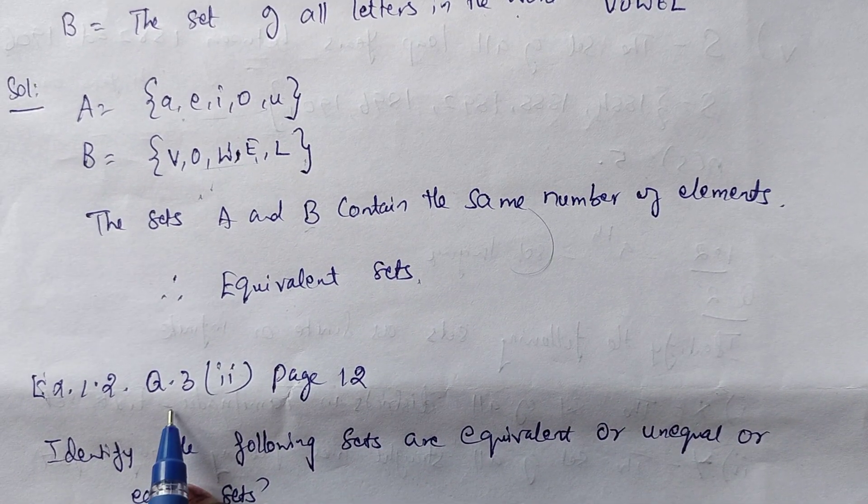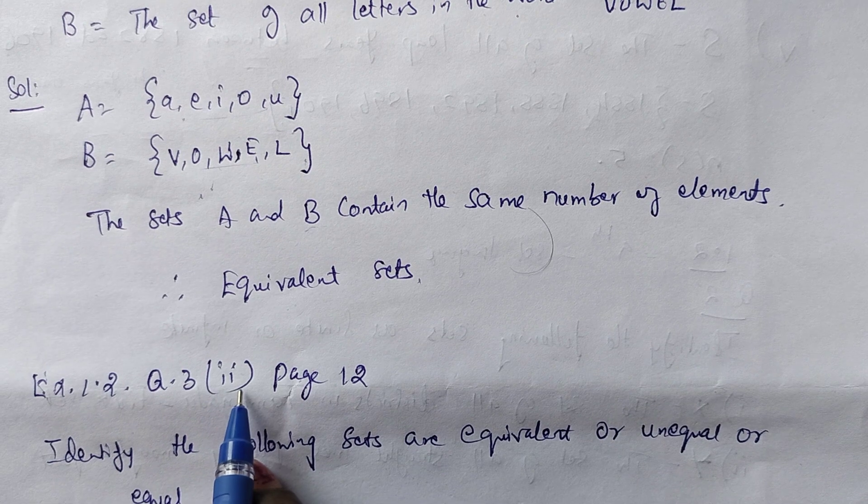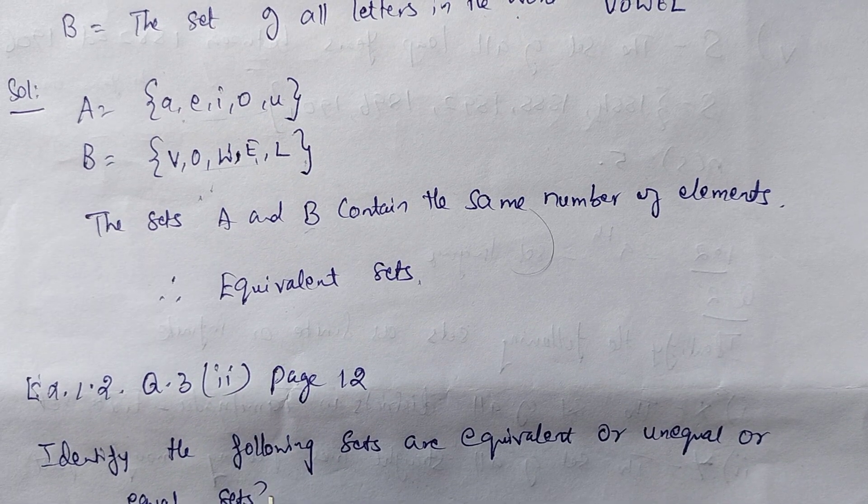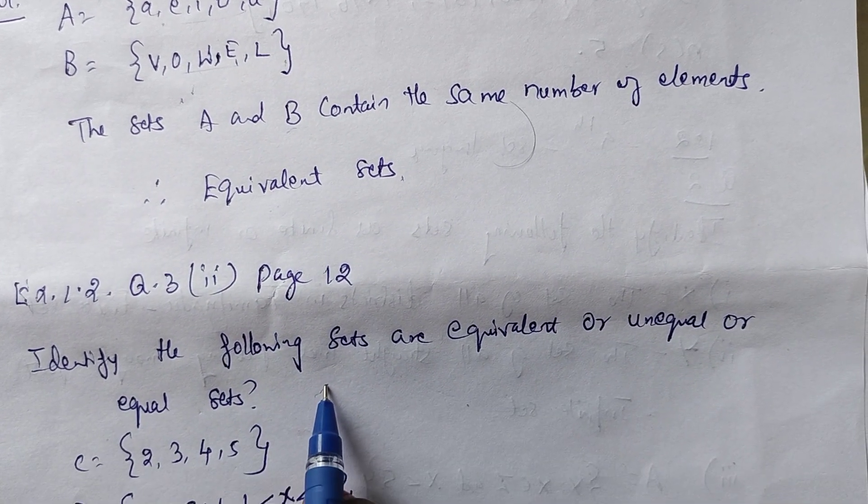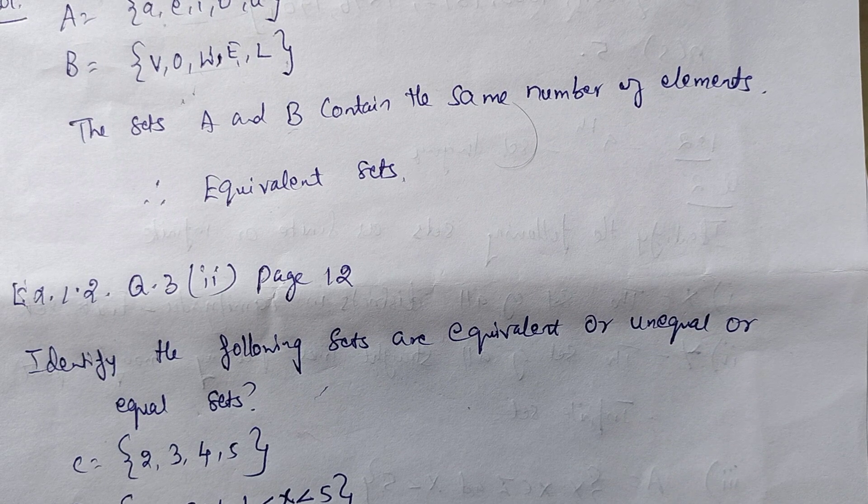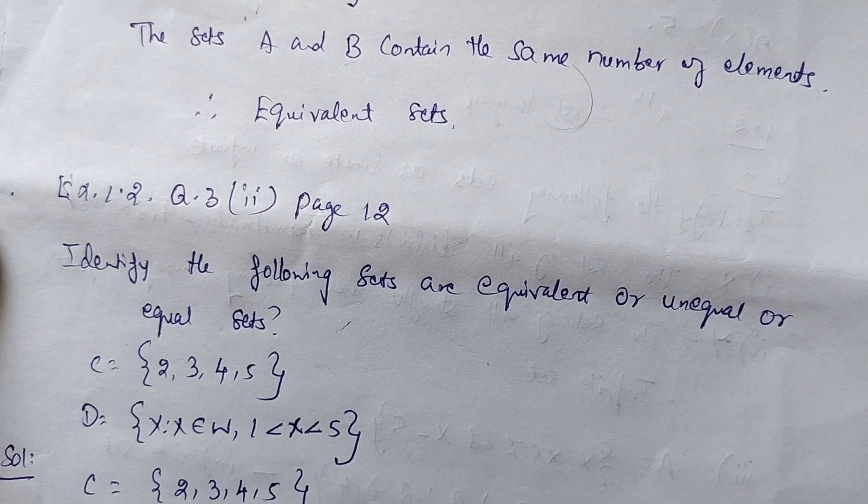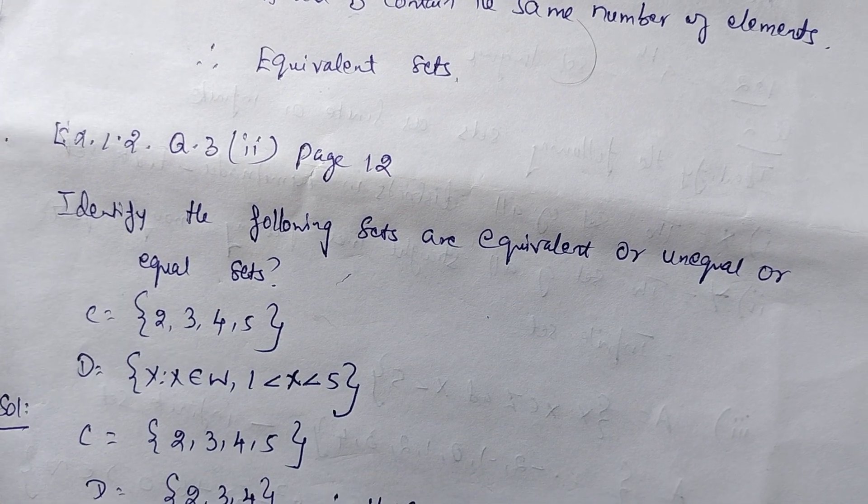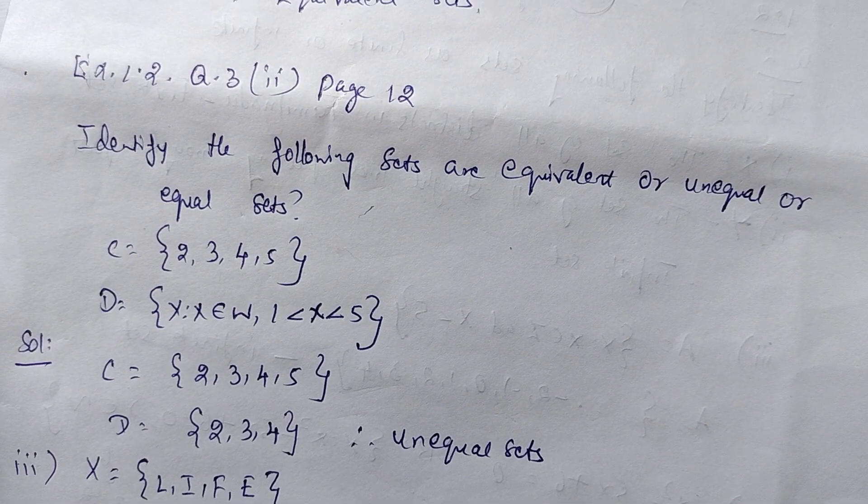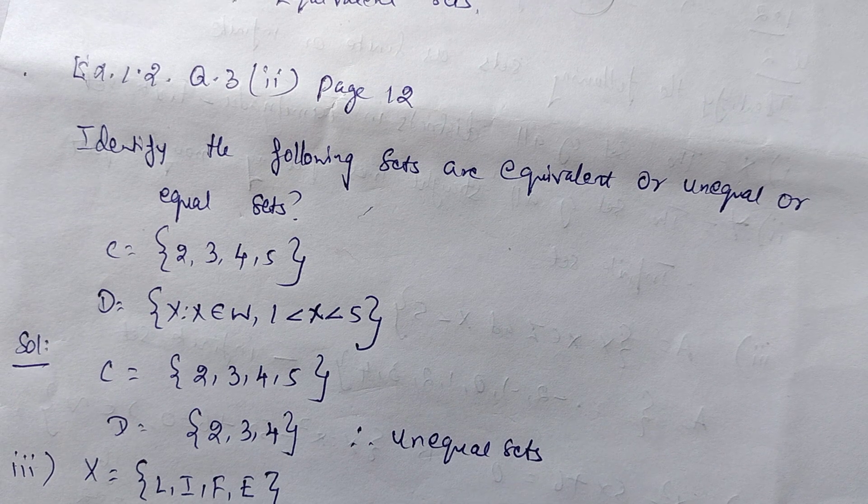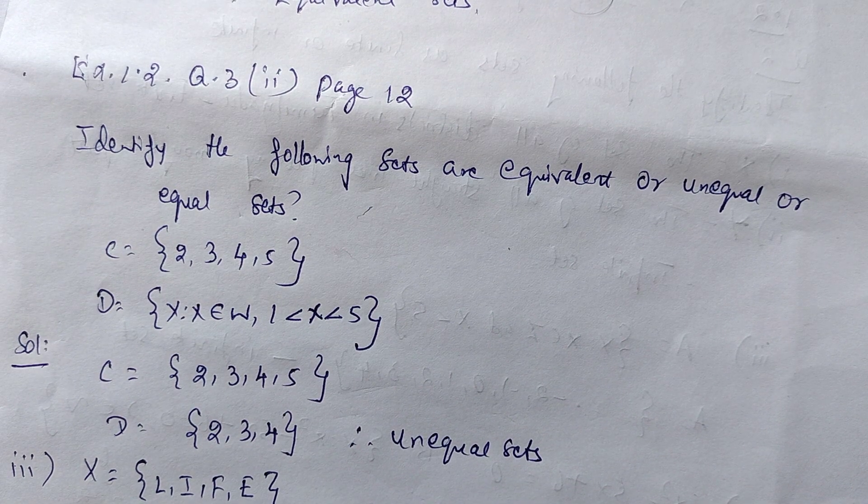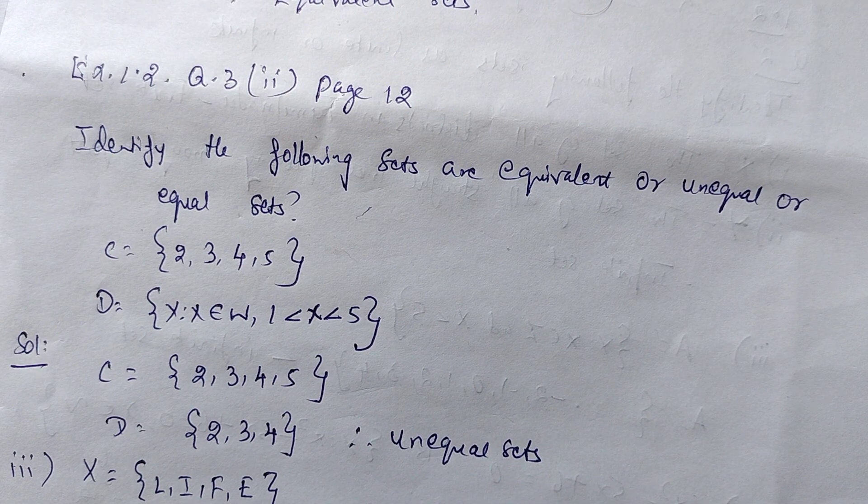Next, Exercise 1.2 set language, Question Number 3, second subdivision. Identify the following sets are equivalent or unequal or equal sets. C equals {1, 2, 3, 4, 5}. D equals {x belongs to whole numbers, 1 less than x less than 5}.